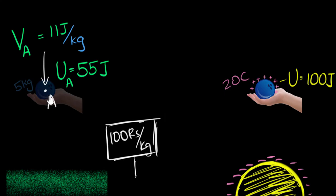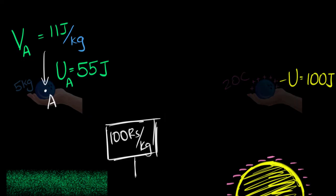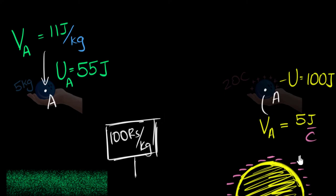If 20 coulombs at this point has 100 joules of potential energy, how much would one coulomb have? Just like before, it's 100 divided by 20 — five joules per coulomb. I can label that point and say: at that point, the potential energy is five joules per coulomb. This number is what we call electric potential at point A. Electric potential is just the potential energy that one coulomb would have — it's an indicator.